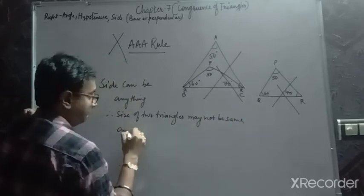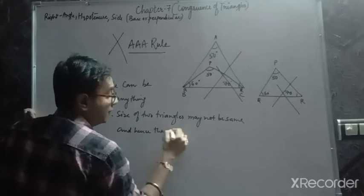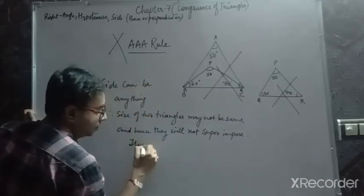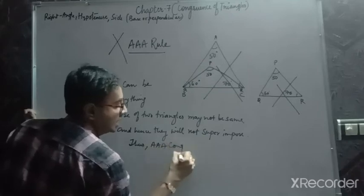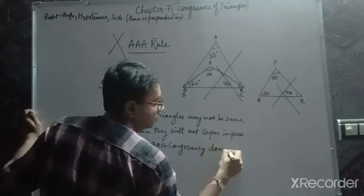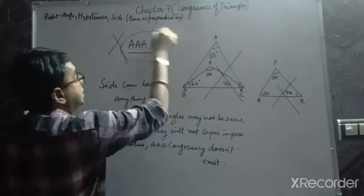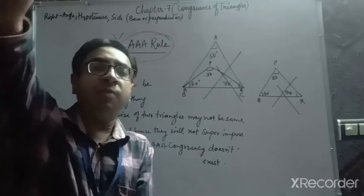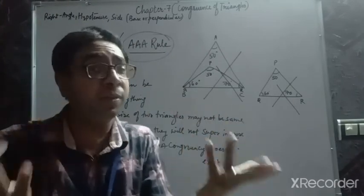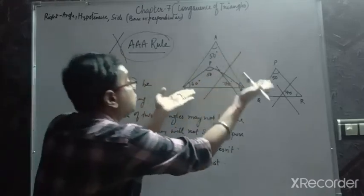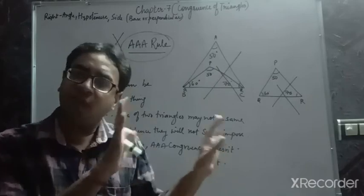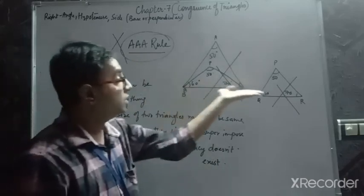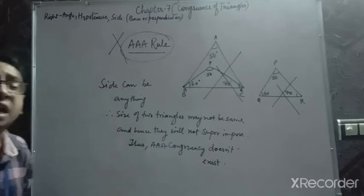Therefore they will not superimpose on each other. Thus, AAA congruency does not exist. The angles may be congruent — 50°, 60°, 70° — going perfectly with the rule. But what about the size? What about the sides? The triangles won't cover each other, so AAA criteria does not exist.